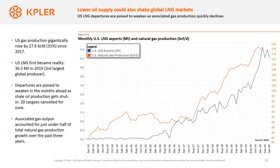With shut-ins starting to become a reality in the US, we could see a slowdown in LNG export growth. This is helped by the fact that there is an LNG glut globally, and that falling associated gas production is actually supporting Henry Hub prices. It's quite astonishing — both JKM and TTF are trading below Henry Hub, and we're not even in summer yet. With more shut-ins coming in, we could see that differential grow in the coming weeks.